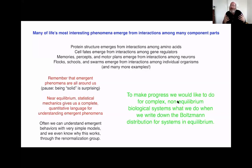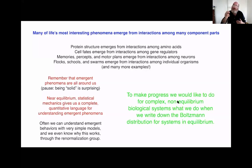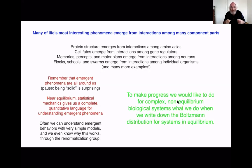If you think about the things that are happening as you listen to me talk, as you look at images, your ability to perceive things, to recall a memory, to plan motor actions - this is not something that happens because single neurons in your brain are doing something. It happens because thousands or even millions of neurons are cooperating in some patterned way. The phenomena are emergent.